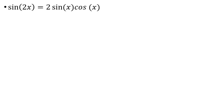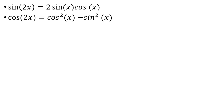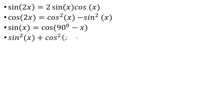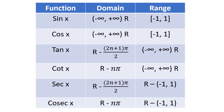Double angle formula: sin 2x equals 2 sin x cos x. Cos 2x equals cos squared x minus sin squared x. Also, sin x equals cos(90 minus x). Pythagorean identity: sin squared x plus cos squared x equals 1.